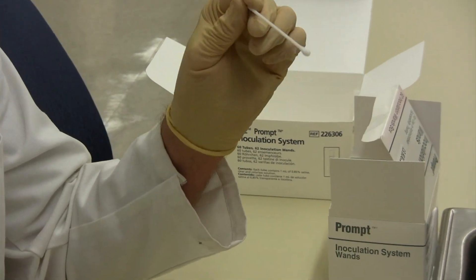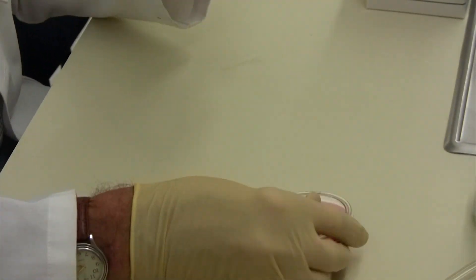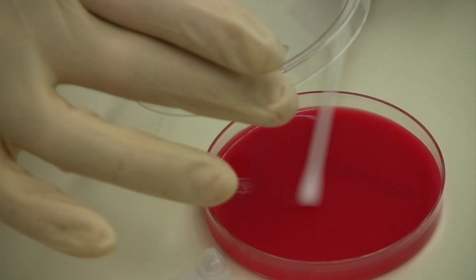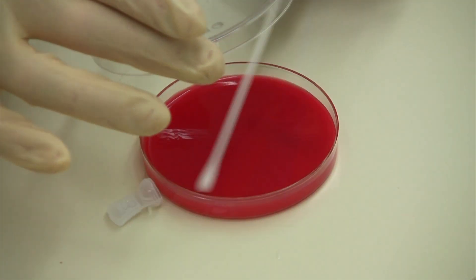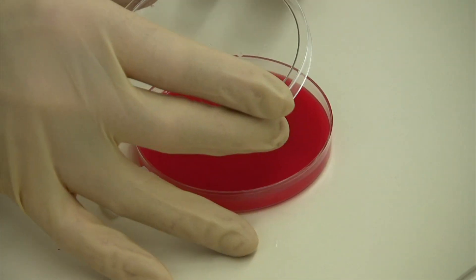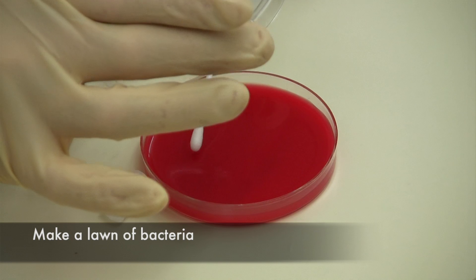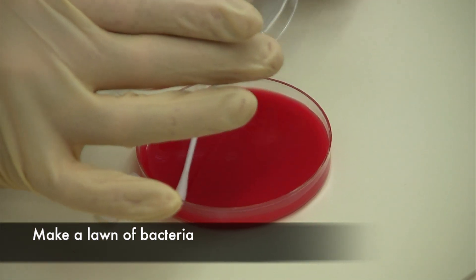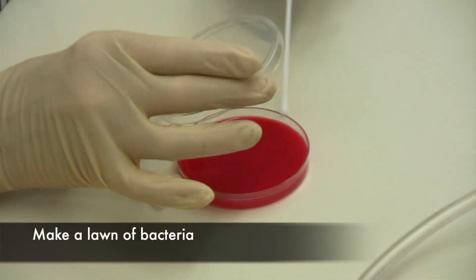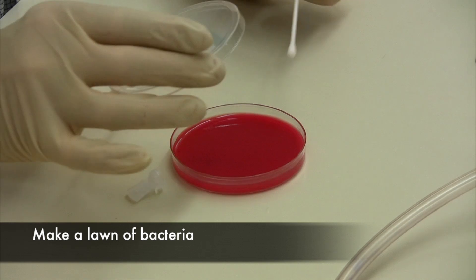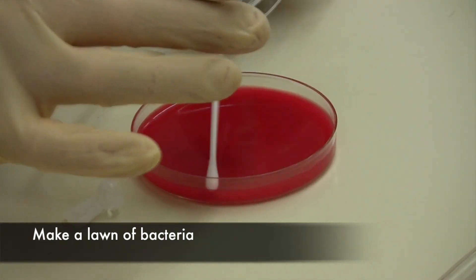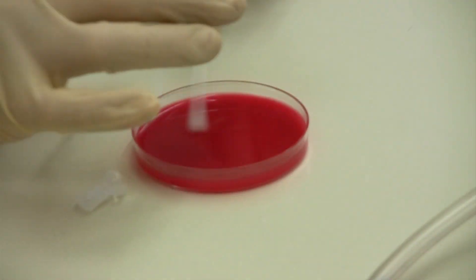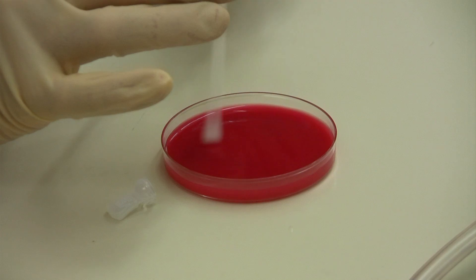Then streak it onto the plate. You can streak the plate three different directions, rotating it 90 degrees, streak the whole plate again, and then again rotate it 90 degrees and streak the plate again, covering the whole complete surface.